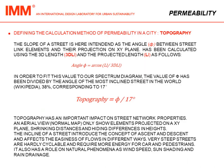Another value we use is called topography, intended as the average slope of streets. The slope of a street is the angle between street link elements and their projection on the XY plane, calculated using the 3D length and the projected length. To obtain the angle we calculate the arc cosine of the ratio between the projected length and the 3D length. To fit this value to our spectrum diagram, it has been divided by the angle of the most inclined street in the world, which is 38%, corresponding to 70 degrees.